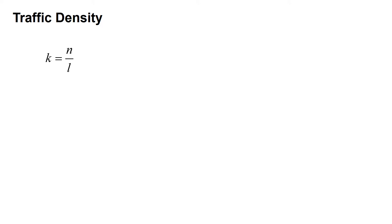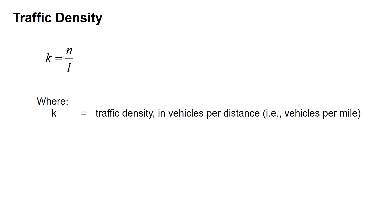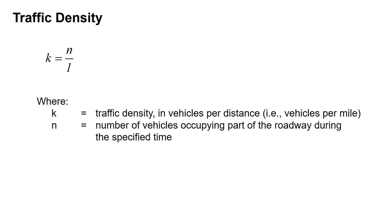Traffic density is defined as K equals N divided by L, where K is the traffic density in vehicles per distance — typically vehicles per mile — N is the number of vehicles occupying part of the roadway during a specified time, and L is the length of the roadway.